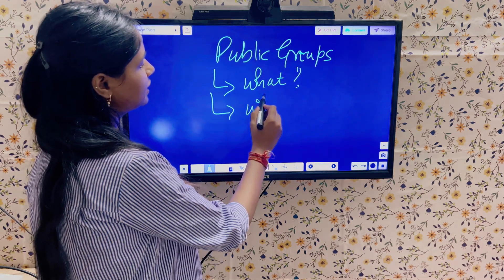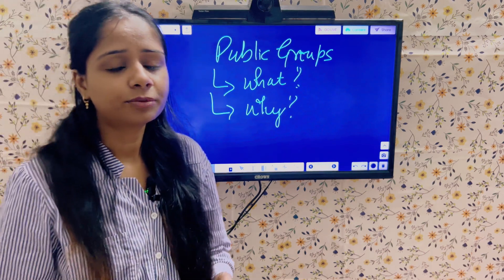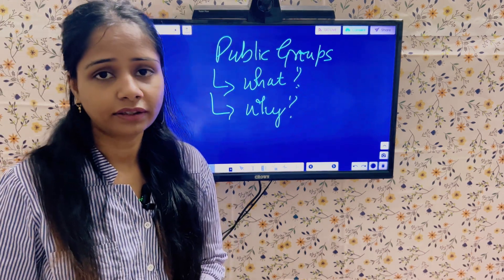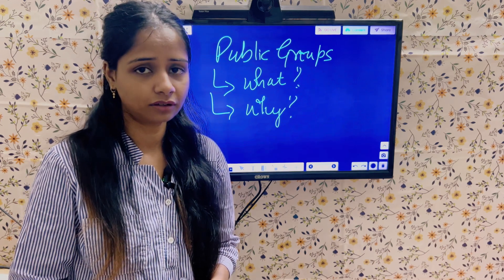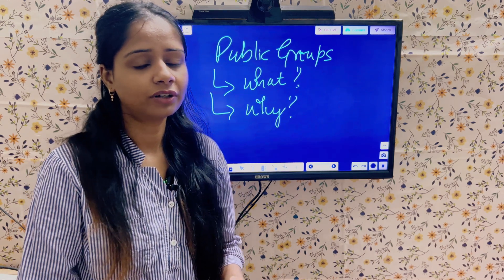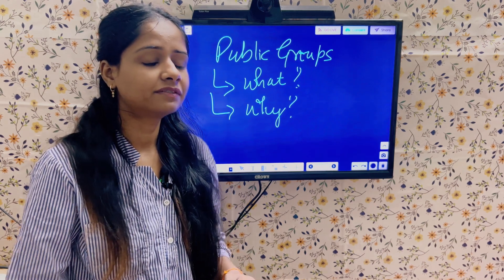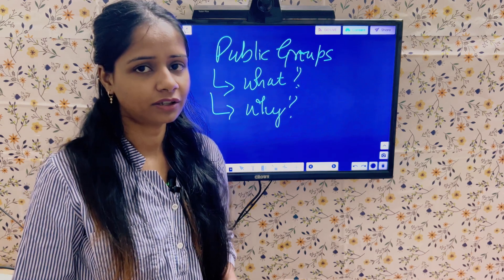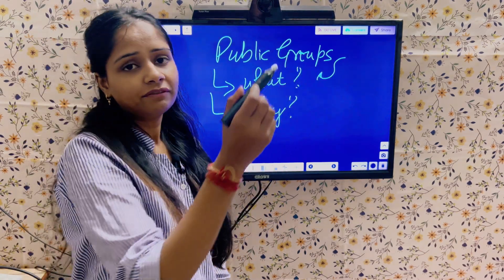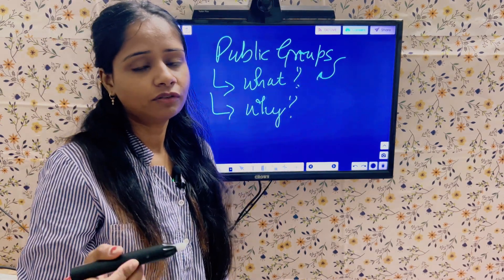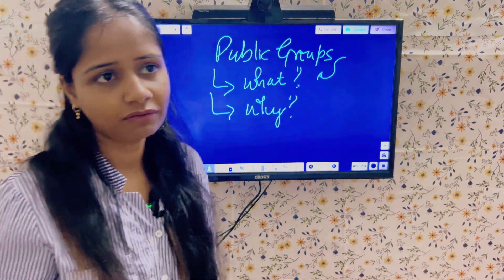The next question is: why do we need public groups? Public groups are needed to share records. If you are aware of sharing rules — whether owner-based or criteria-based — with a single user in the owner-based sharing, we cannot directly share the record. So we need to create a public group and add the users we want to share the record with.